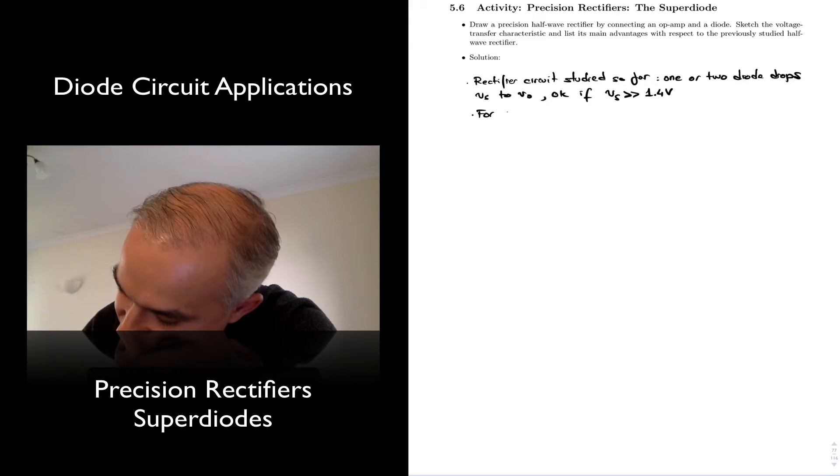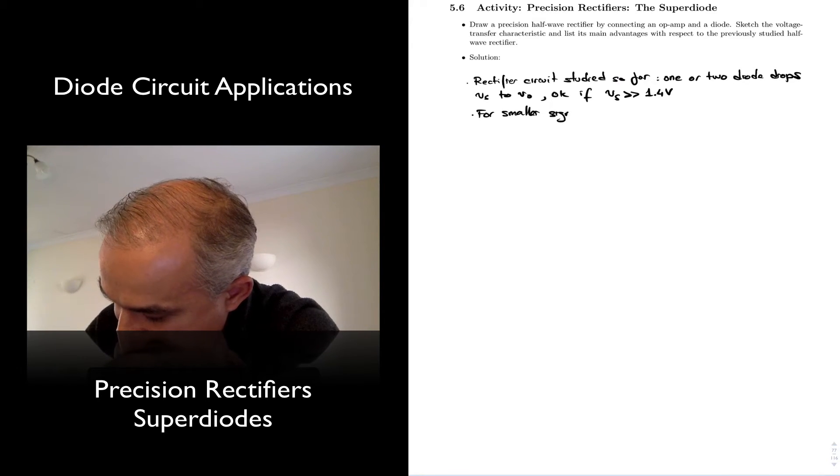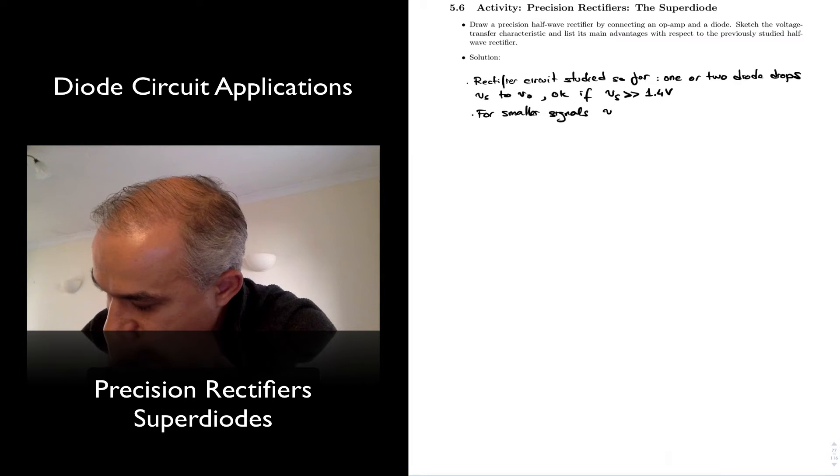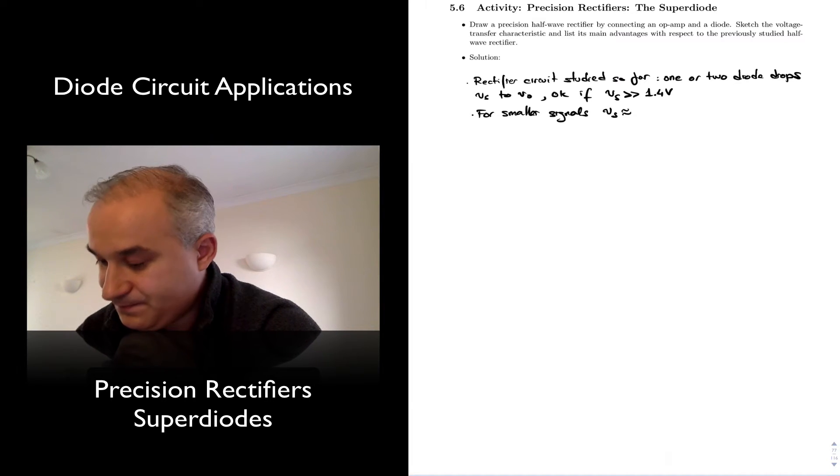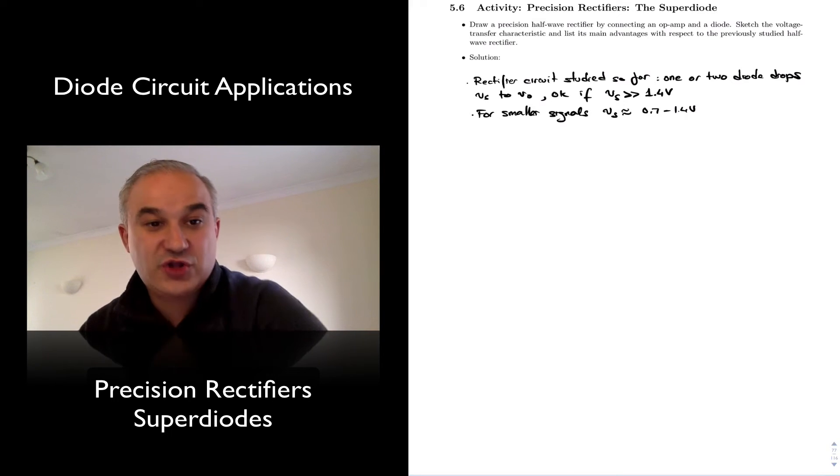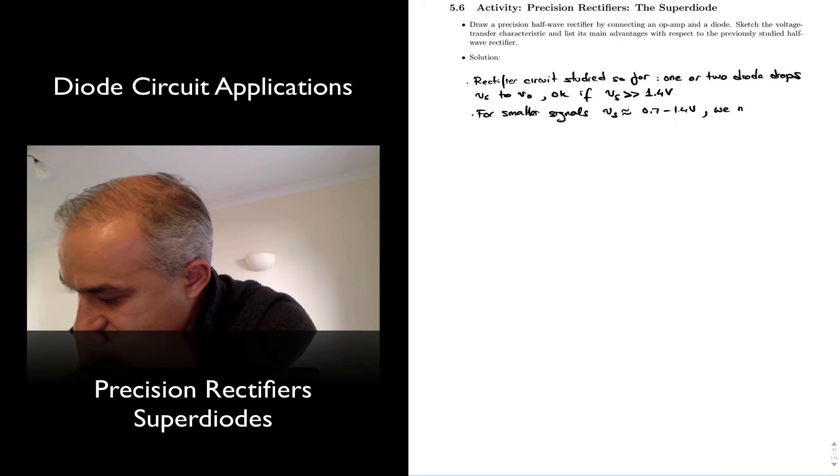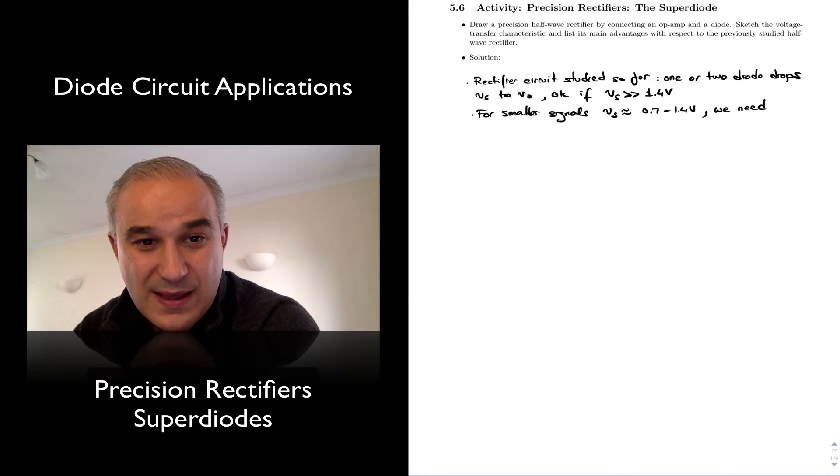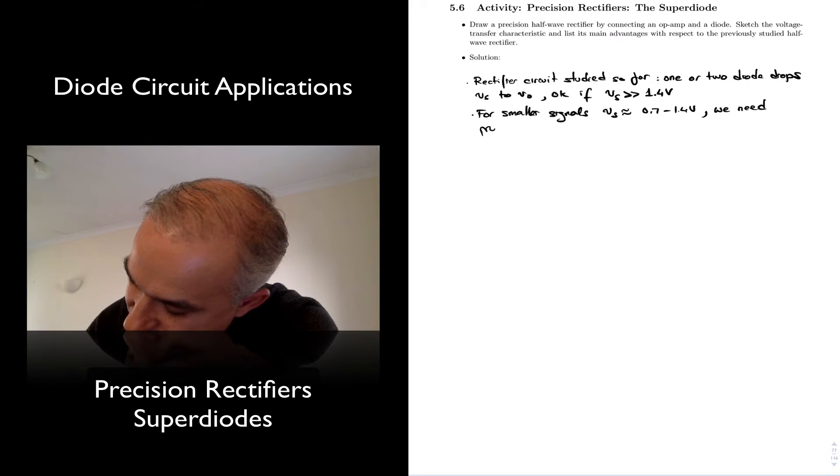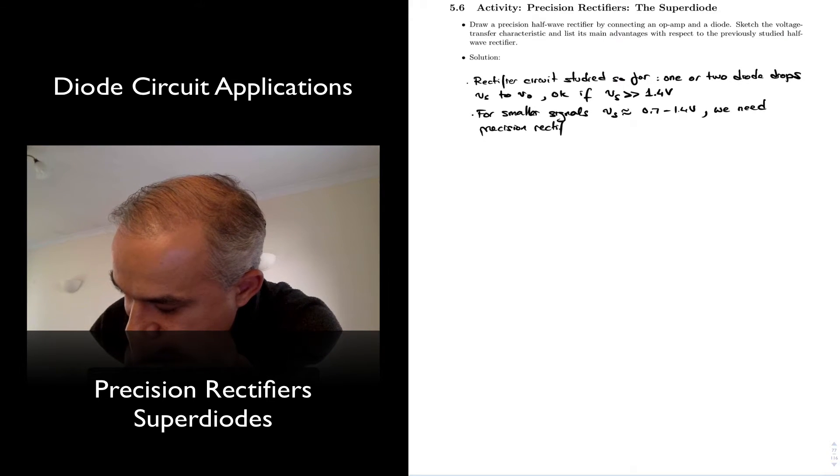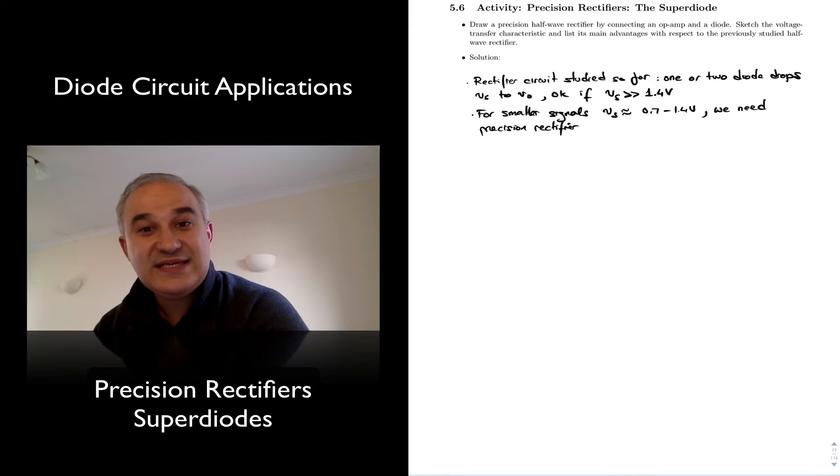But for smaller signals, when Vs gets approximately equal to 0.7 to 1.4 volts, you cannot tolerate that. And what we need, we need a precision rectifier. Let's see how we can do that.